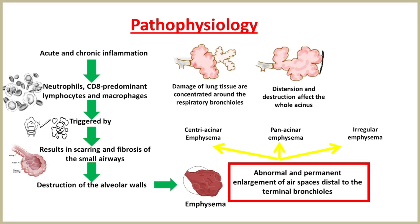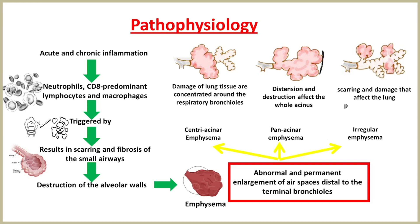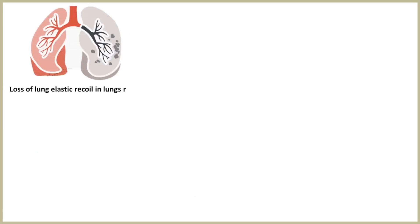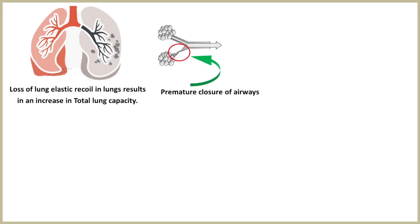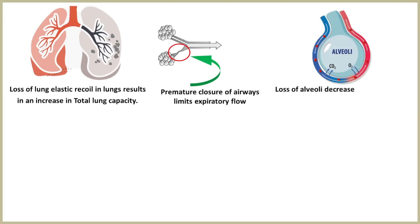Finally, in irregular emphysema, as its name implies, there is scarring and damage that affect the lung parenchyma patchily, independent of acinar structure. Emphysema leads to expiratory airflow limitation and air trapping. The loss of lung elastic recoil results in an increase in total lung capacity, and premature closure of airways limits expiratory flow, while the loss of alveoli decreases capacity for gas transfer, leading to ventilation-perfusion mismatch.